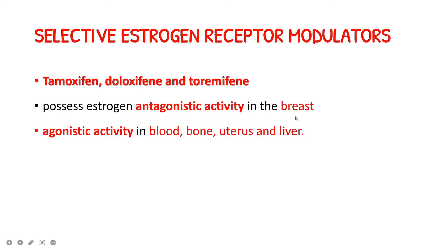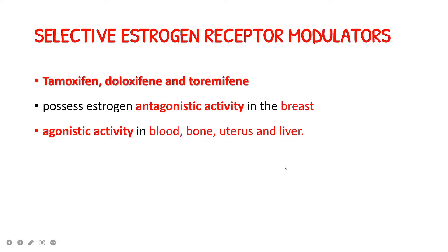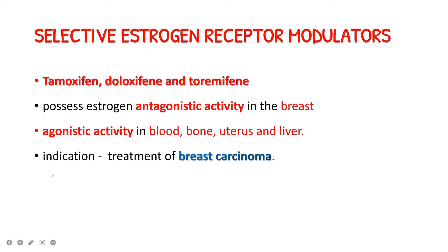Coming to tamoxifen, deloxifen, and tormifen: these drugs possess estrogen antagonistic activity in the breast, making them very useful in the treatment of breast carcinoma. They have agonistic activity on blood, improving the lipid profile by increasing HDL levels and decreasing LDL levels. On the bone, they decrease bone resorption. However, on the uterus they can cause endometrial carcinoma, and on the liver they predispose to thromboembolism.